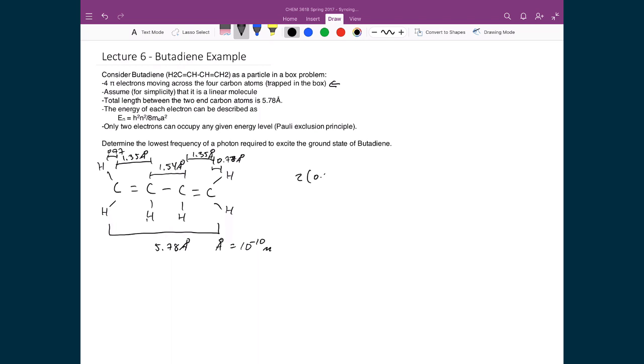So then the summation of all of these distances is what gives us this 5.78 angstroms. So again, we have 2 times 0.77, plus 2 times 1.35, plus 1.54. And that gives us the total length of our box, in this case the total length of the molecule, which is 5.78 angstroms.